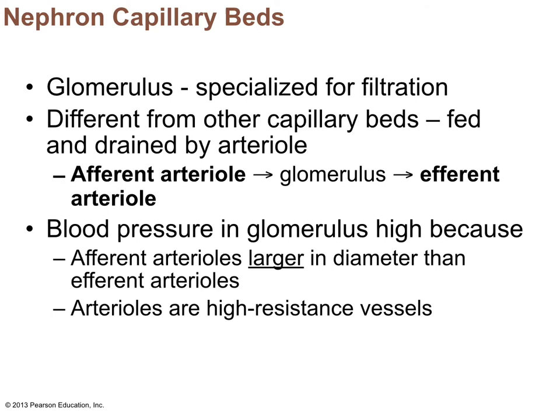Because the efferent arteriole is high-resistance and won't stretch, we maintain pressure inside the glomerulus. If it could stretch, we'd lose that pressure gradient. This is a one-way system — we're creating pressure inside, so things only move from inside the capillaries outward in this section of the nephron. There is no reabsorption back into the glomerular capillaries here because the pressure gradient only pushes fluid outward.